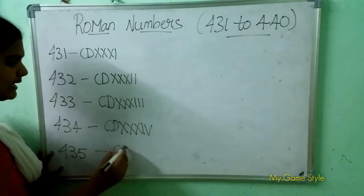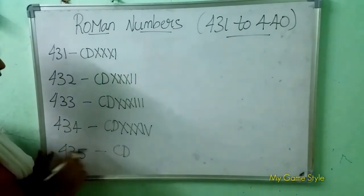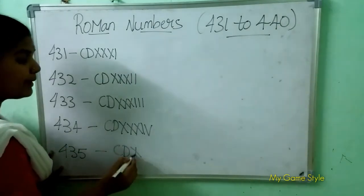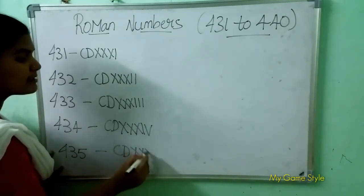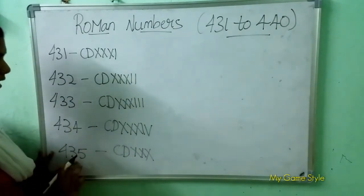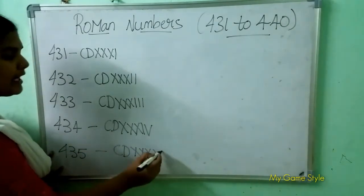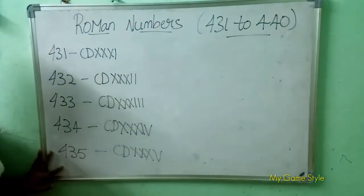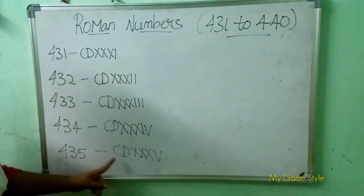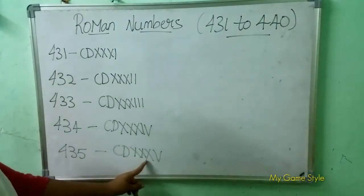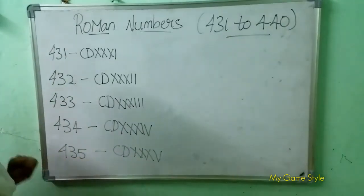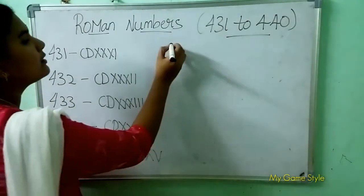Next, 435 — how to write 435? CD is 400, triple X is 30, V is 5. So this means 435.